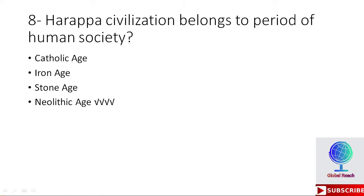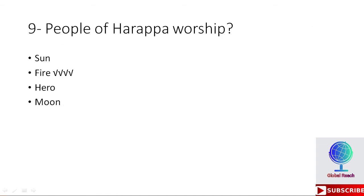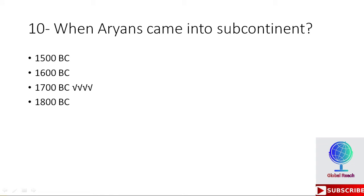MCQ 9: The people of Harappa worshipped — sun, fire, hero, or moon? The right option is fire. The people of Harappa worshipped fire. MCQ 10: When did Aryans come into the subcontinent — 1500 BC, 1600 BC, 1700 BC, or 1800 BC? The right option is 1700 BC. Aryans came into the subcontinent in 1700 BC.